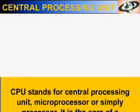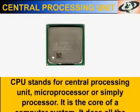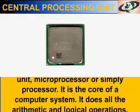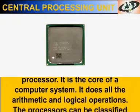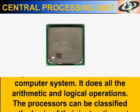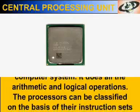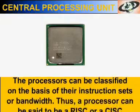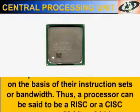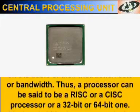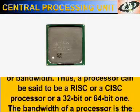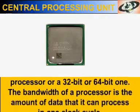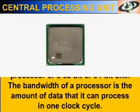CPU stands for Central Processing Unit, Microprocessor, or simply processor. It is the core of a computer system and performs all the arithmetic and logical operations. The processors can be classified on the basis of their instruction sets or bandwidth. Thus, a processor can be said to be a RISC or CISC processor, or a 32-bit or a 64-bit one. The bandwidth of a processor is the amount of data that it can process in one clock cycle.